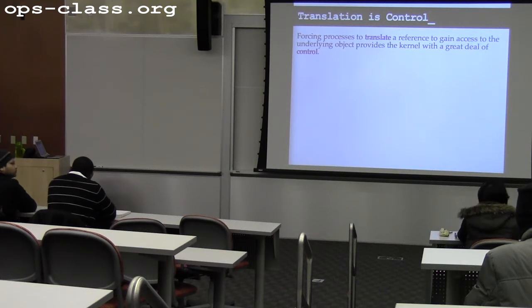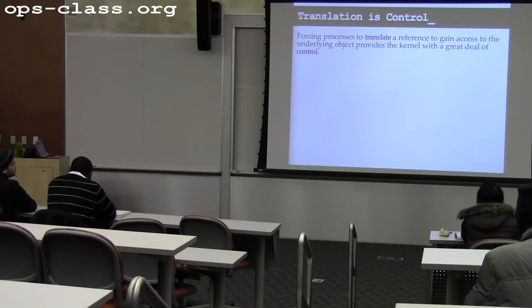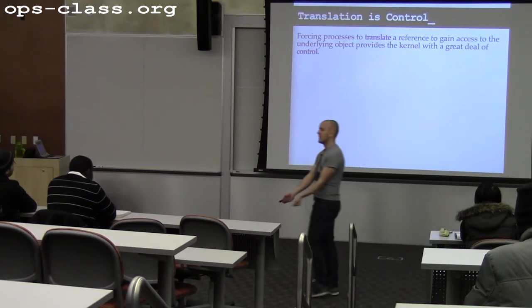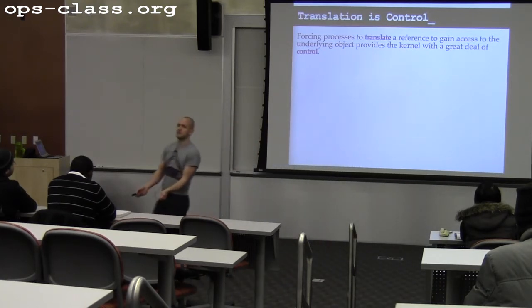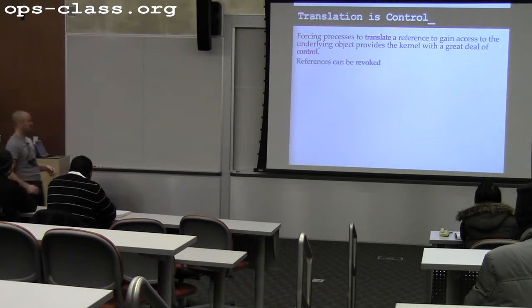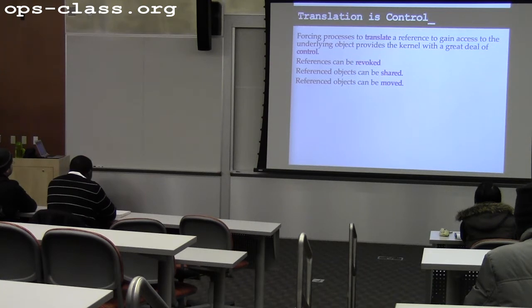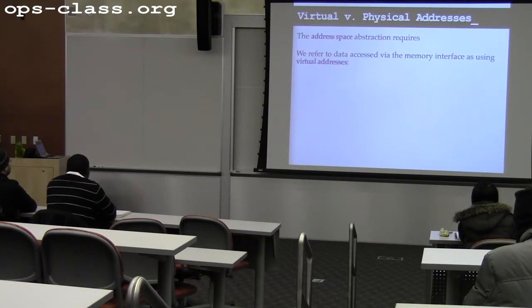And something else — I can move things around without the process knowing. I don't have to tell the process where something is. All I give it is a reference, and I say: when you try to translate this, I'll make sure it's somewhere useful. So to summarize: I can revoke them, I can share them between processes, I can move them around without altering the reference itself, and I can alter other things about the reference object without altering the reference.